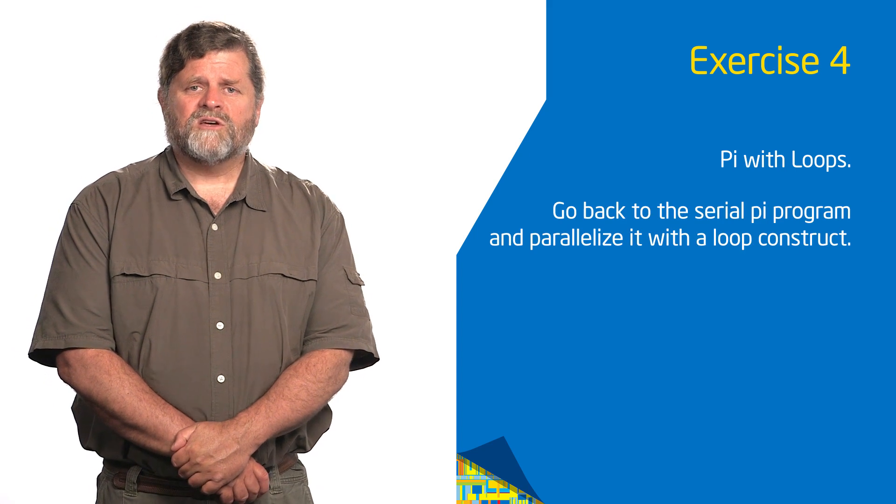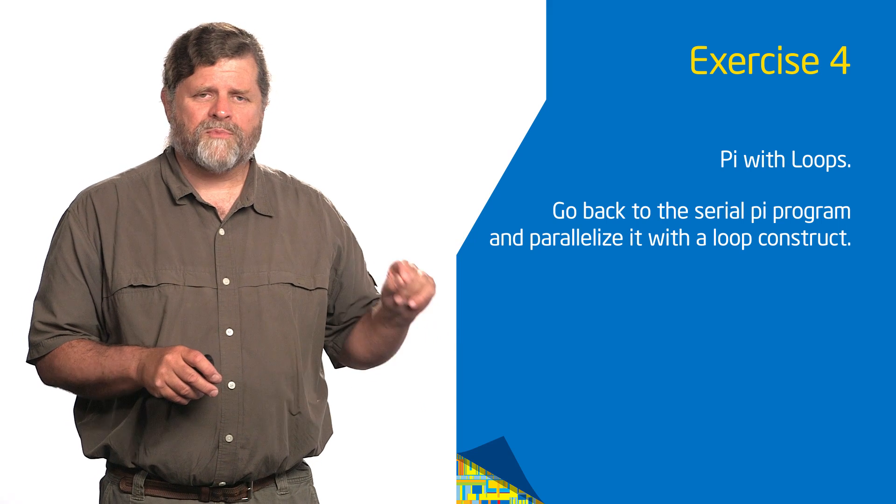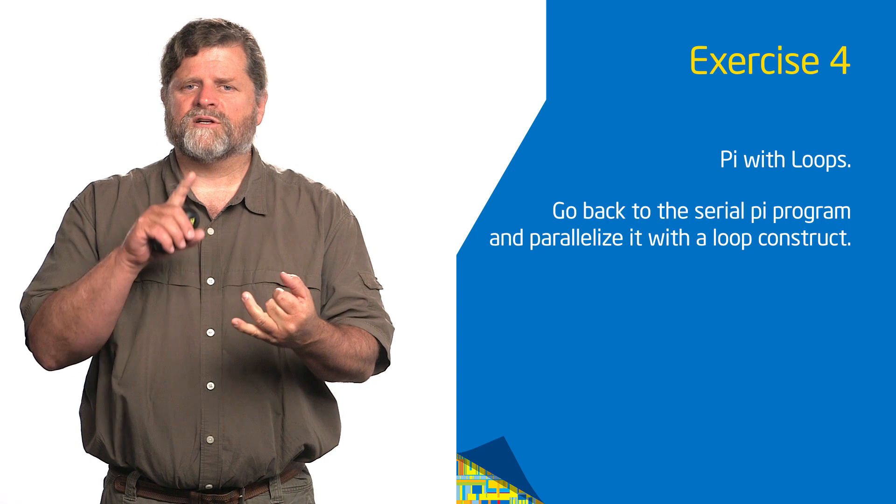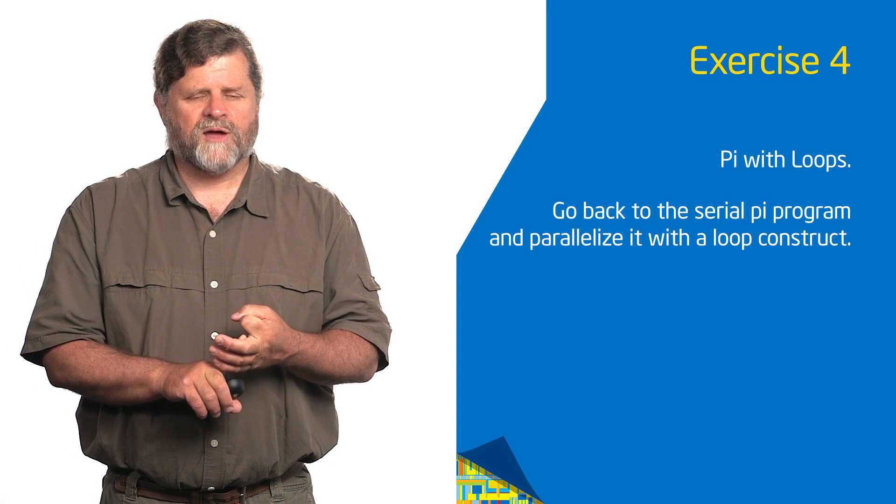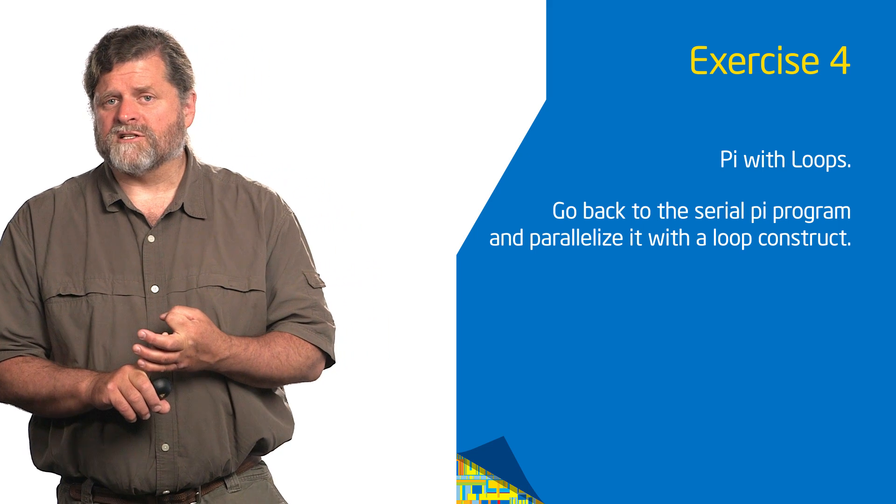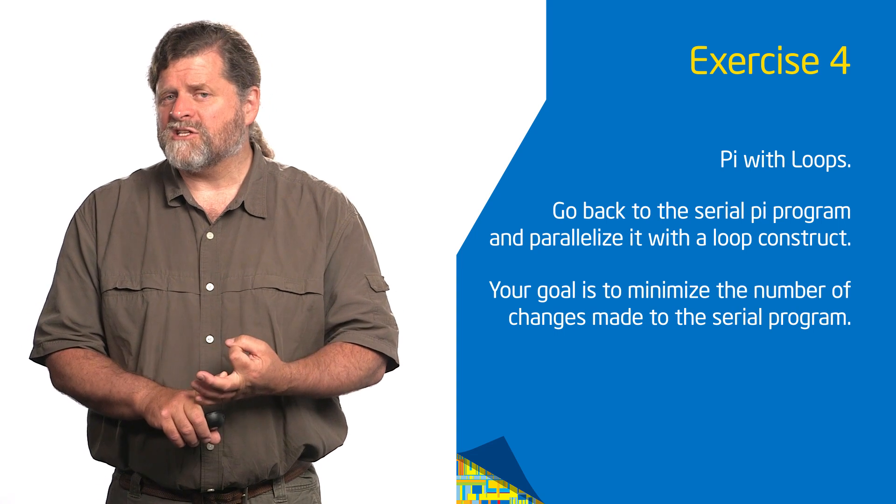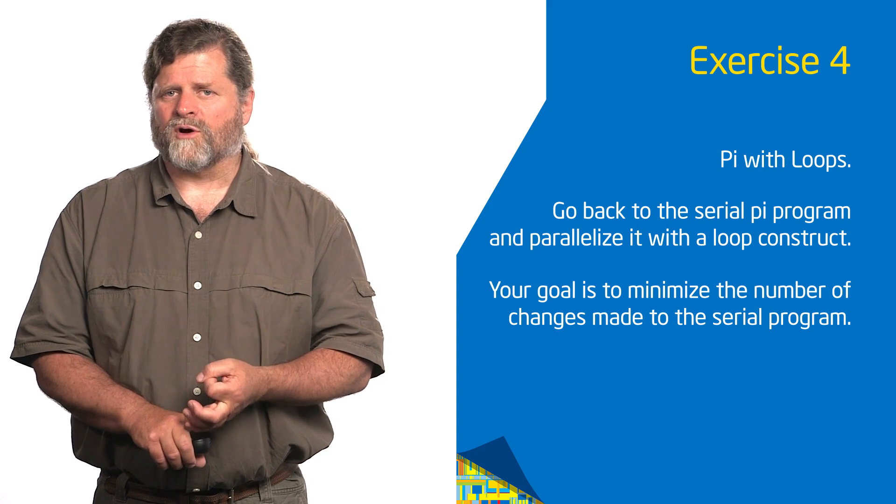So now we got another exercise. And for this one, what I suggest you do is go back not to your last parallel pi, go back to your first pi program, the serial pi program. And using the parallel construct, the for construct, and a reduction, create a parallel version of that program. And I'm going to give you an additional challenge to think about. I want you to see what is the minimum number of changes you have to make to your original serial program to make it parallel with a parallel for. Alright, you got that? So I want you to run off and do that exercise. Then we'll come back next and discuss it.